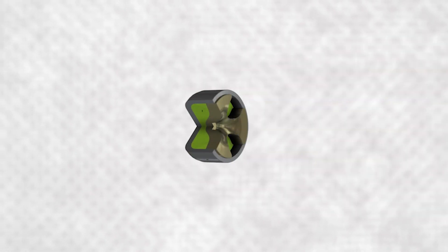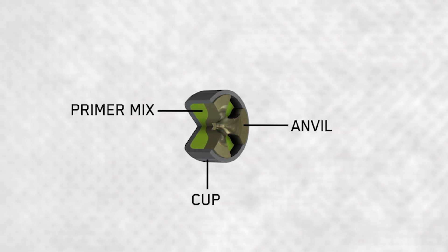Centerfire cartridges have a primer that contains primer mix and a metal anvil inside of a small cup.